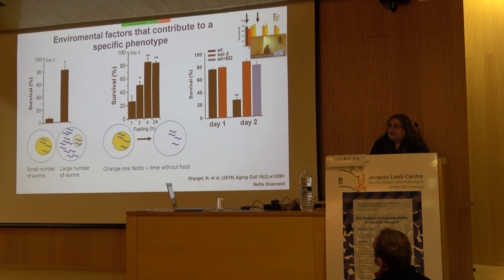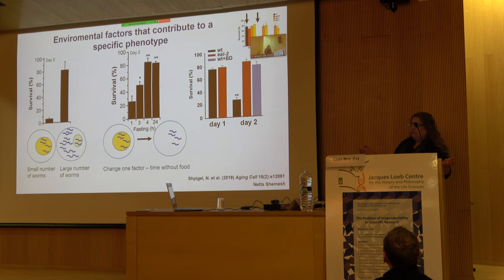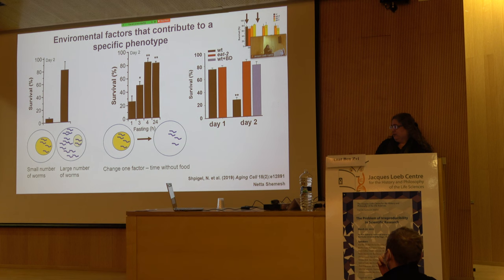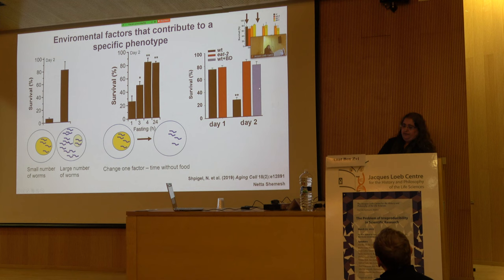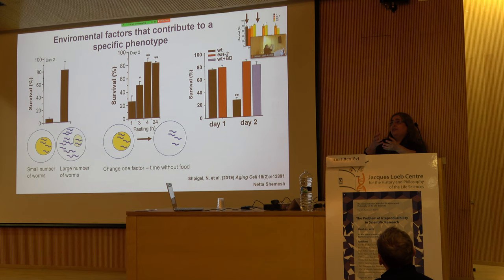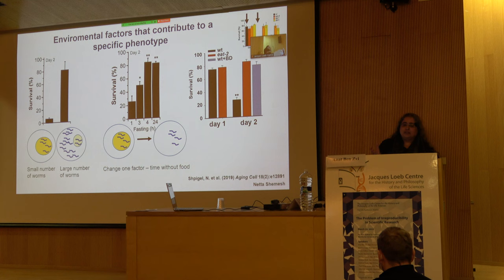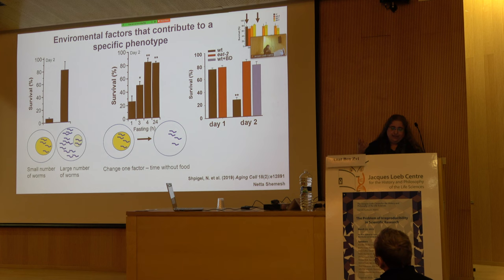We also took it a step further: we used a mutant with a defective pharynx, meaning when it eats it doesn't grind food very well. It can sit in a pile of bacteria and be happy, but actually get very little food inside. We give them the same amount of food but their ability to ingest it changes — and we get the same rescue. We published that dietary restriction and dietary manipulation can change this phenotype, and it does so differently from the reproduction signals — they are not overlapping. If you put both together, you get an even bigger change in some aspects and less in others, reshaping the protein quality control environment, which means you can change this quality control system in many different ways.